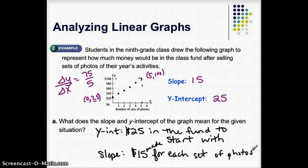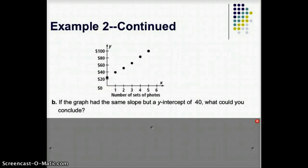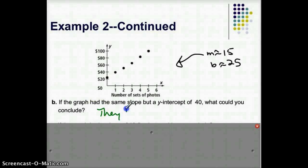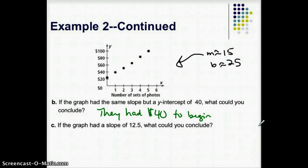Okay, and then if you're looking at this next one. Okay, so this was the original one, and we said the slope was about $15 for the slope, and the y-intercept was about $25. If the graph had the same slope but a y-intercept of 40, what could you conclude? Okay, write your guess, and then check with mine. I would say they had $40 to start out with. Okay, to begin with. The next one. If the graph had a slope of 12.5, what could you conclude? Make sure you answer that, and then check with mine. Okay, I'm going to say they make $12.50, $12.50 per set of photos.